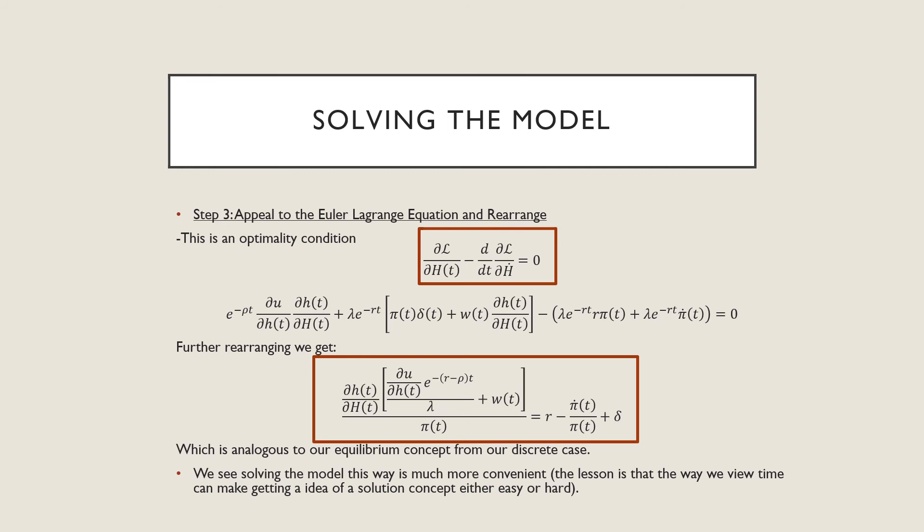That's what we say from this equation here. We're going to plug and chug these numbers, and if we rearrange this expression, we get our analogous equilibrium concept, which is the same as what we had in our discrete case.